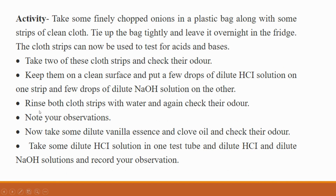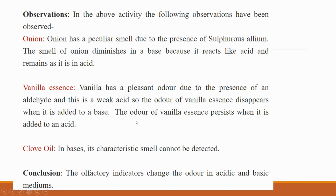This is the whole activity. Note your observations. After that, there is a little more work. Take some dilute vanilla essence and some clove oil and check their odor. The observation is that clove oil is basic in nature, so you will not get any odor. Onion behaves as acidic in nature, and vanilla essence also gives an acidic nature response.